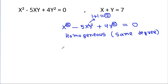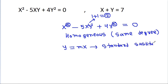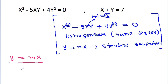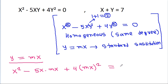In a homogeneous equation, y is equal to mx — it is a standard substitution. So if we substitute y equal to mx, then we have x squared minus 5x times mx minus 4 times mx squared is equal to 0.